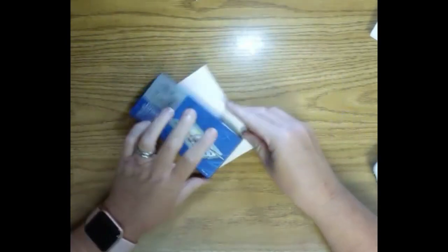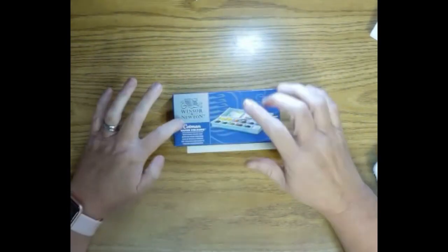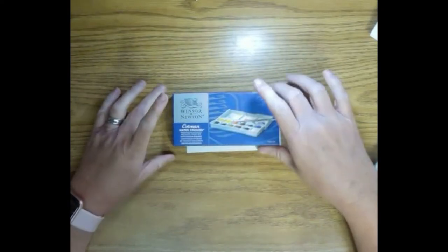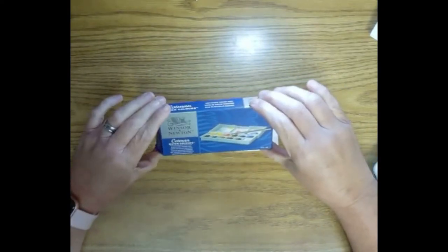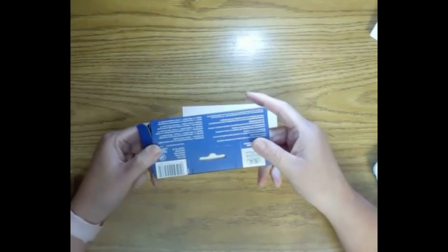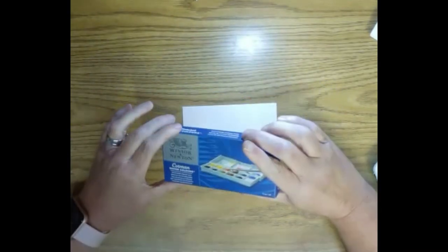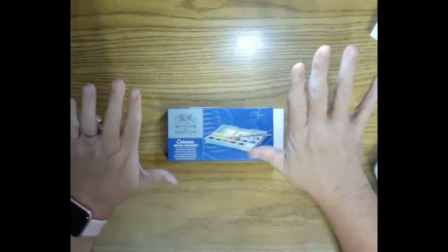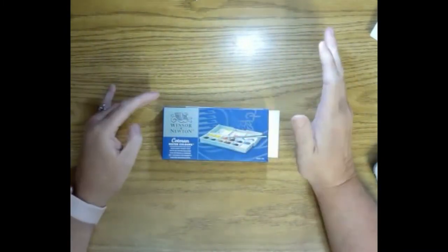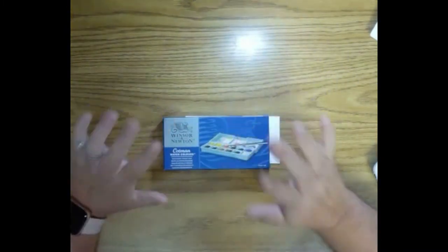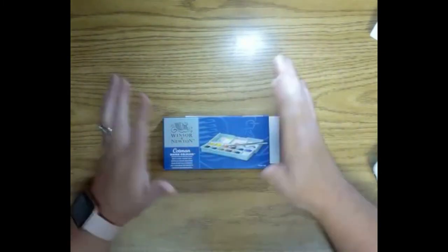But this is the Winsor and Newton Cotman Watercolor Sketch Pocket Box. And I got this off of Amazon. So I haven't opened it. I haven't even looked at it yet. I thought I'd open it with y'all and see what we think.